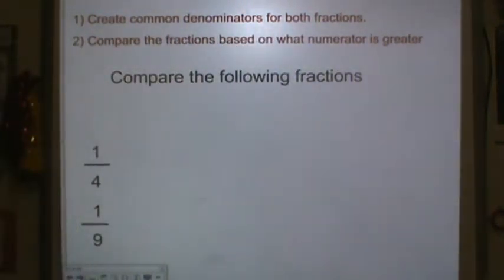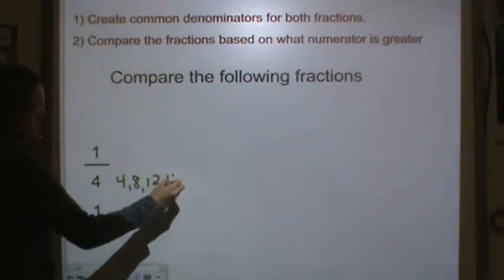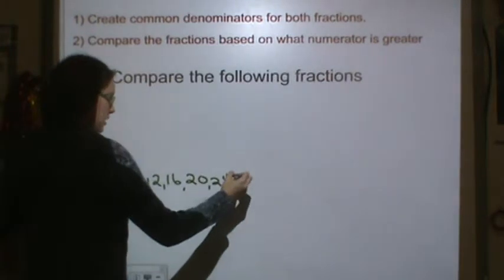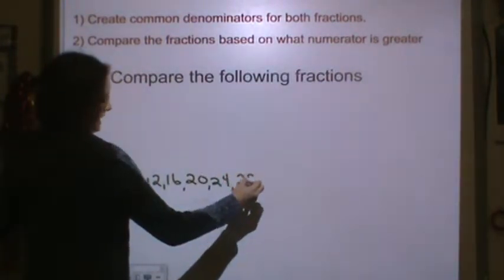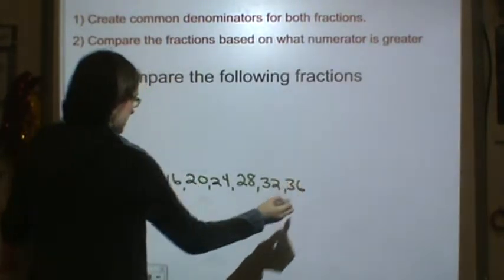Last one we're going to do together. First, you need to find a common denominator, so start by writing the multiples. 4, 8, 12, 16, 20, 24, 28, 32, 36.